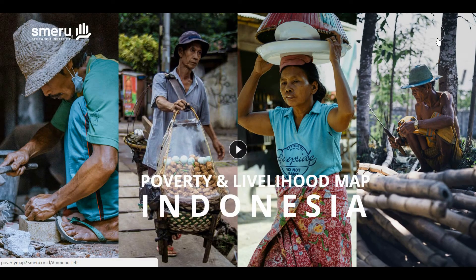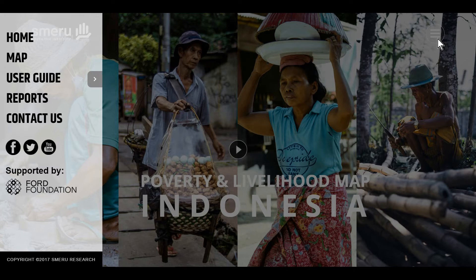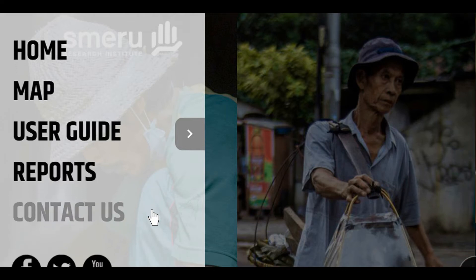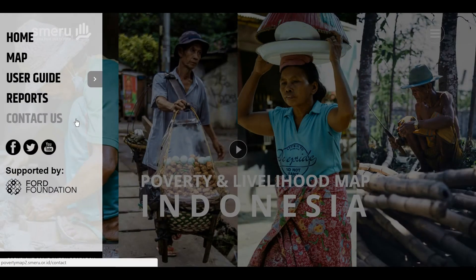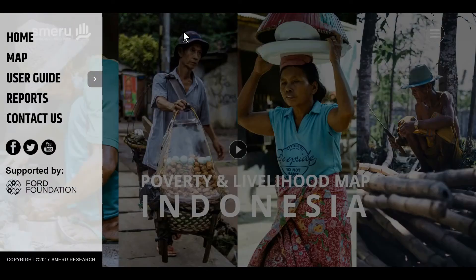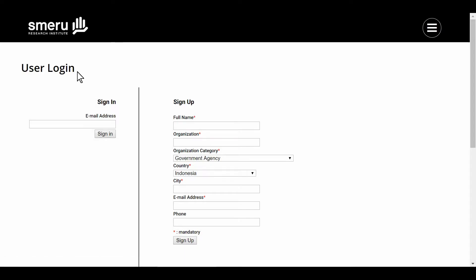A menu bar will slide across from the page's left side. Here's what the navigation menu looks like. Clicking home will bring you back to the home page. If you are accessing the web page for the first time, clicking map will bring you to the registration page. We will explain about how to register later.